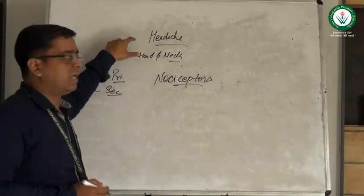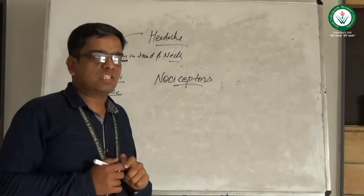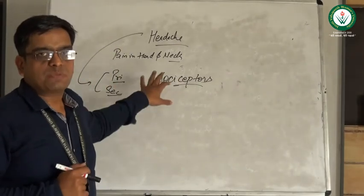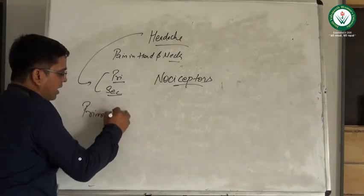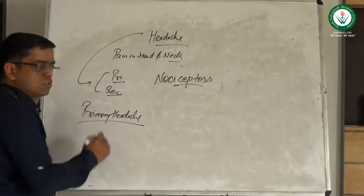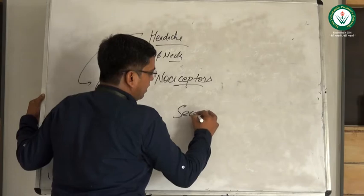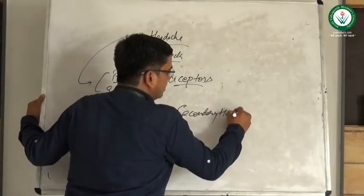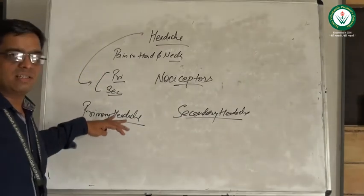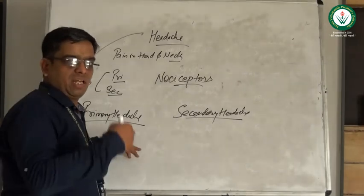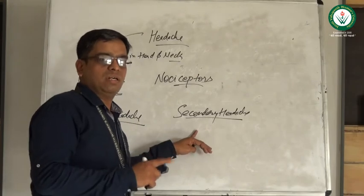Classification of headache is broadly into primary headache and secondary headache. Primary headaches are disorders in themselves — they are not arising because of any other disease condition, and they are the most common type of disorders we encounter. Secondary headache is a headache condition arising because of some other underlying disease condition. So primary headaches are diseases in themselves, while secondary headaches arise due to some other disease condition.